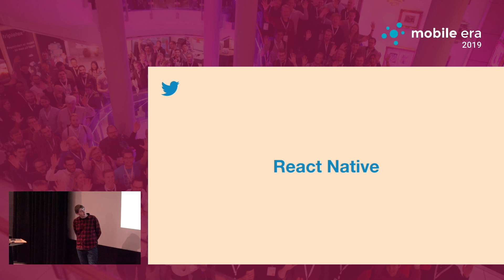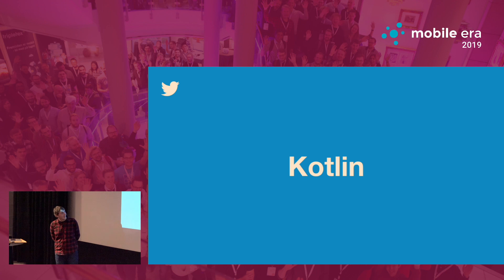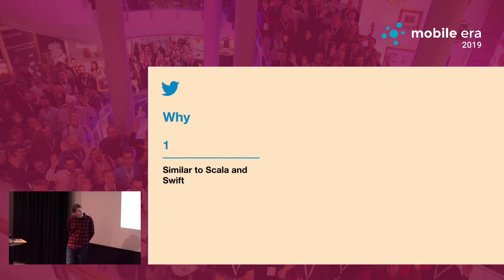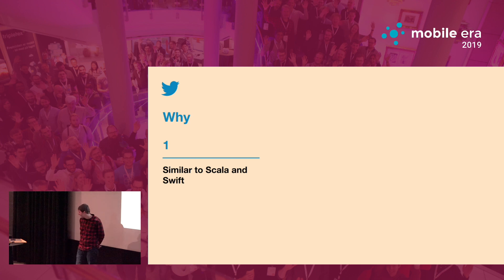That brings me to our next speedboat: Kotlin. Kotlin is great because it's like a mixture of Scala and Swift. At Twitter we use Scala on our servers almost primarily, and Swift is my favorite language, so mixing the two is pretty nice. It's very performant — on Android it's obviously native, and on iOS it compiles to LLVM bytecode, which also runs natively. It's designed for multi-platform out of the box, so we can have the same exact code running on iOS, Android, and web.